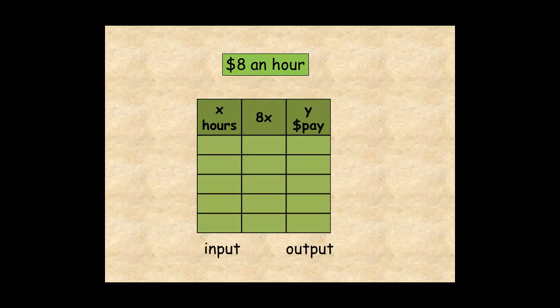You can organize the input values, the output values, and the function rule in a table. For example, for one hour's work, you earn $8. For two hours, $16. For three hours, $24, and so on.